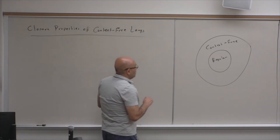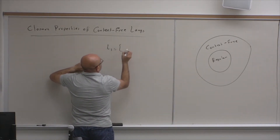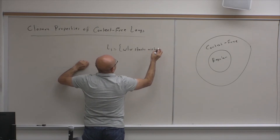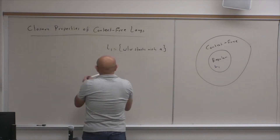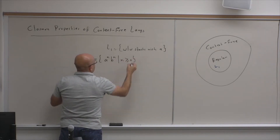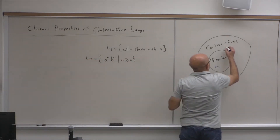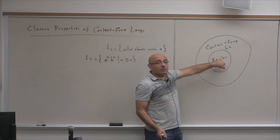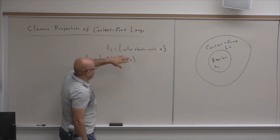For example, L1 is the set of strings W such that W starts with A. L1 is a regular language and it belongs to both sets. Now, L2 is {A^N B^N | N ≥ 0}. This is not regular — we proved that — but it's context-free. So L2 belongs to context-free languages. You can represent it with a context-free grammar, but you cannot represent it with a finite automaton or a regular expression. L1 can be represented by a finite automaton or a regular expression.